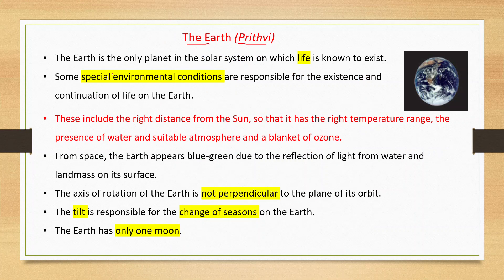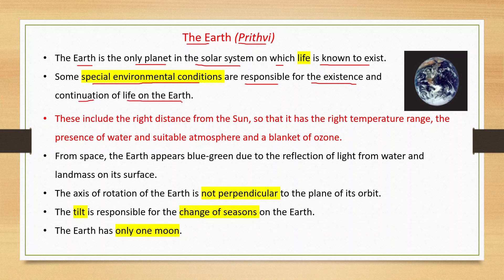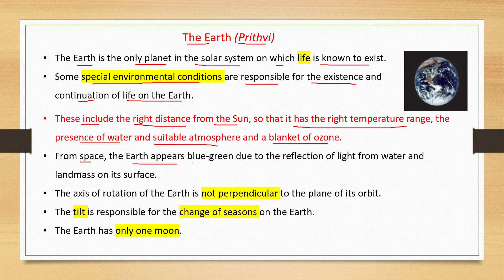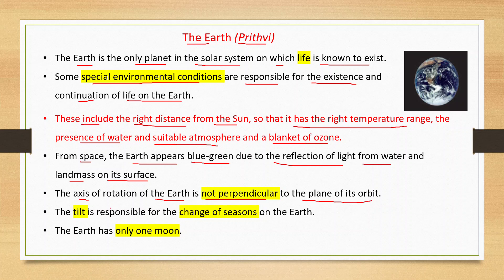The Earth is the only planet in the solar system on which life is known to exist. Some special environmental conditions are responsible for this: the right distance from the sun giving the right temperature range, the presence of water, a suitable atmosphere, and a blanket of ozone. From space, the Earth appears blue-green due to the reflection of light from water and land mass. The axis of rotation of the Earth is not perpendicular to the plane of its orbit, and this tilt is responsible for the change of seasons on the Earth.